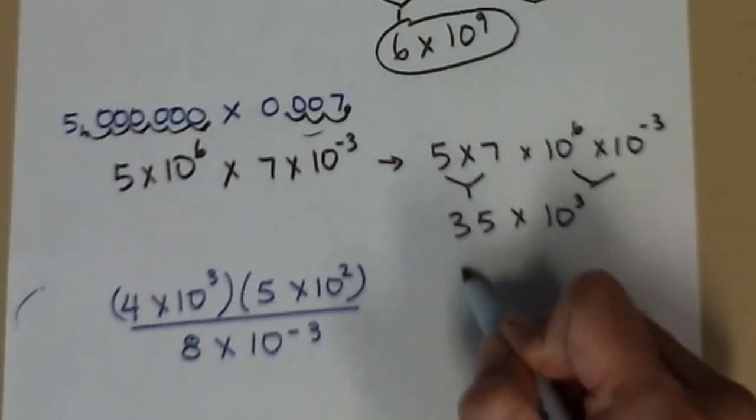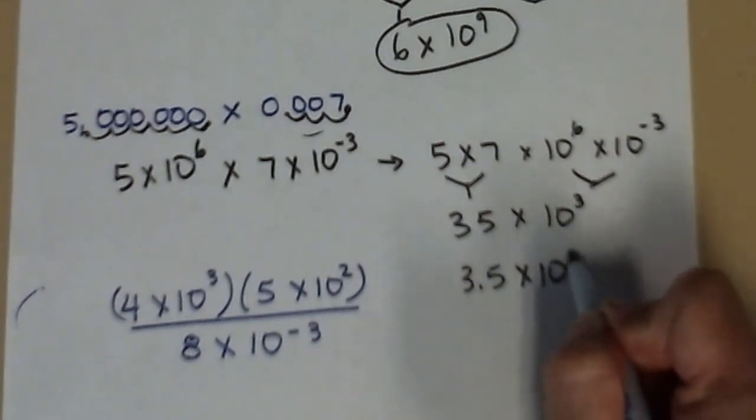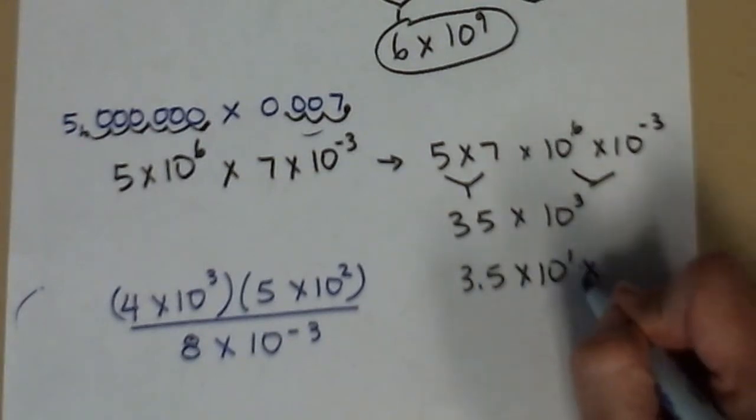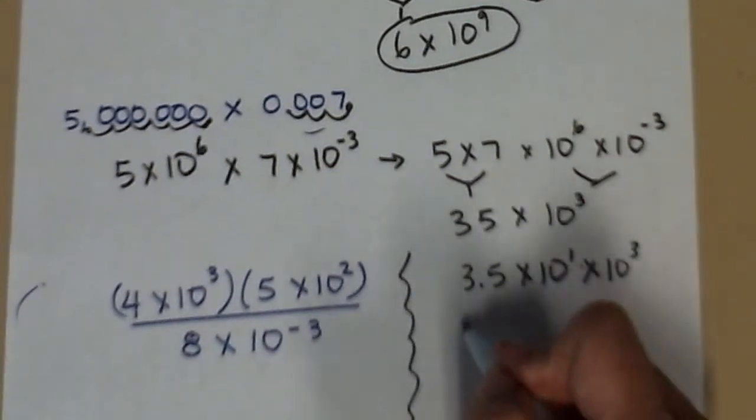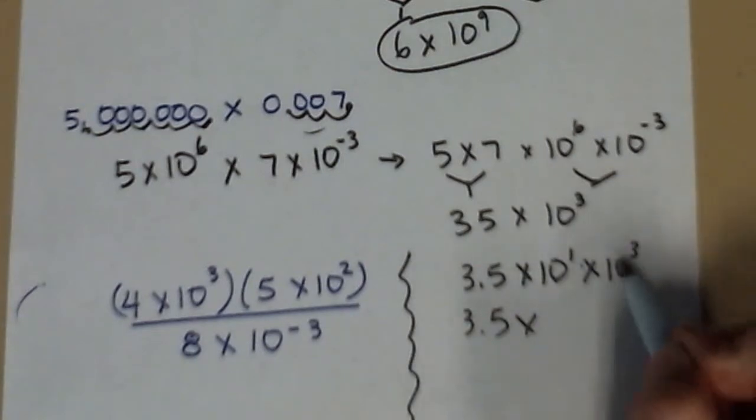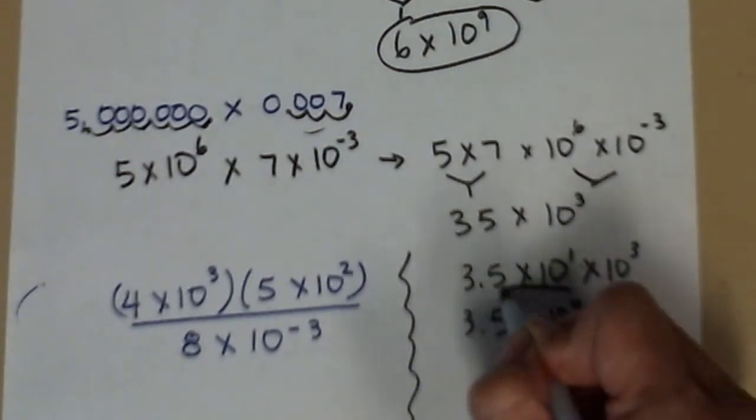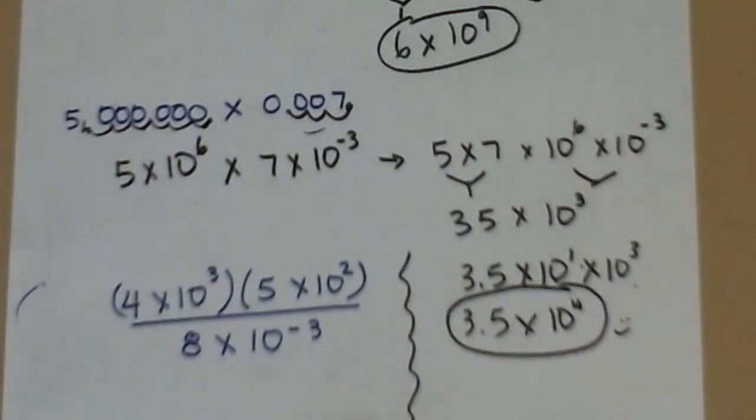So 35 is 3.5 times 10 to the 1st. So that's just my 35 times 10 to the 3rd. So that's 3.5 times, now I have like bases again, add the powers, 10 to the 4th. Final answer right there. Big smiley face for that one.